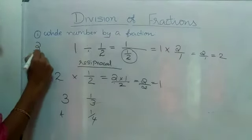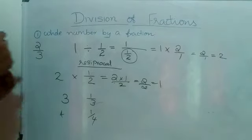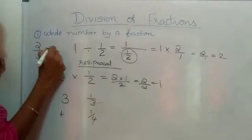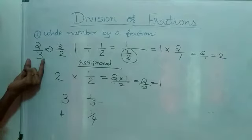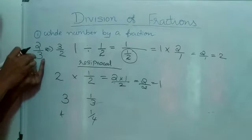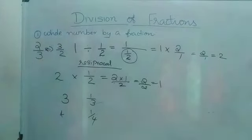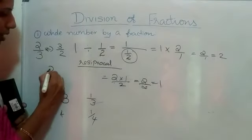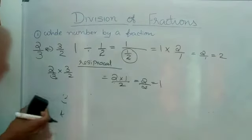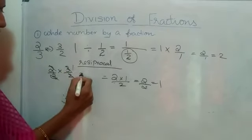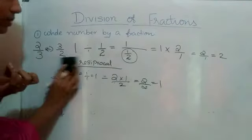Similarly, if two-by-three is the number, what is the reciprocal of two-by-three? The reciprocal will be three-by-two. When writing a fraction two-by-three, to find its reciprocal you write the denominator as numerator and numerator as denominator. When we multiply two-by-three into its reciprocal three-by-two, two and two cancel to one, three and three cancel to one, so one-by-one equals one. The product will be one. Such numbers are called reciprocal numbers.